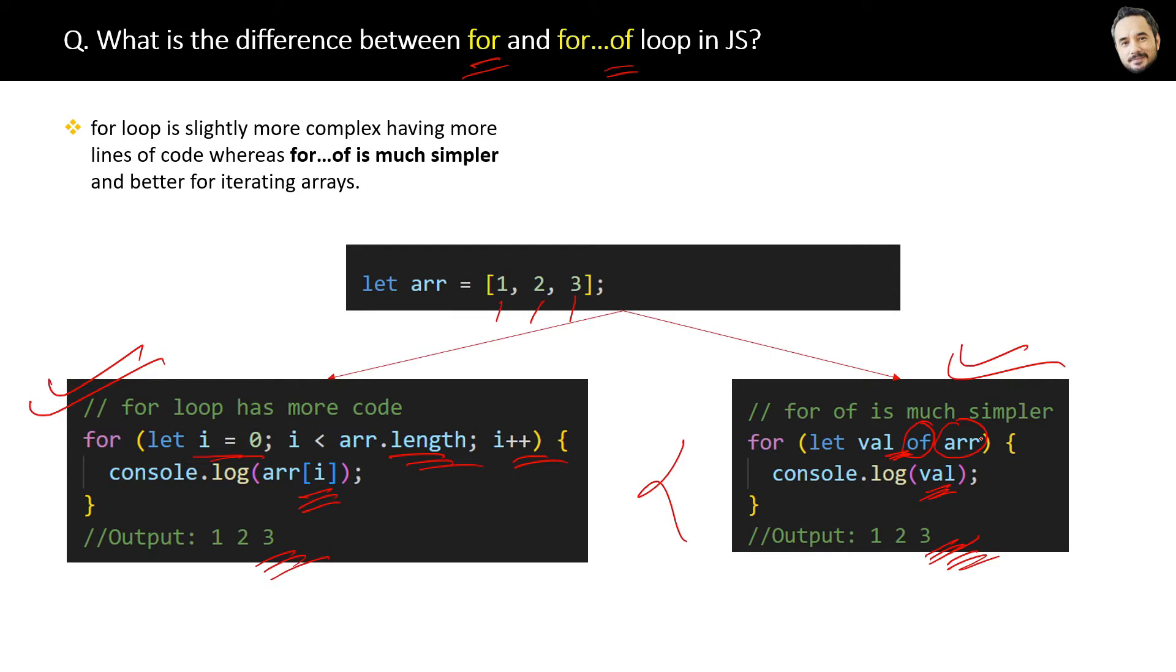Now the question is, when we have the simpler one, why do we need the for loop? The reason is: for loop is a general way of iteration which can be used to do any kind of iteration with anything.